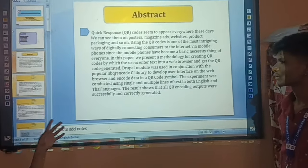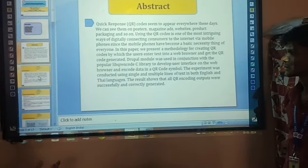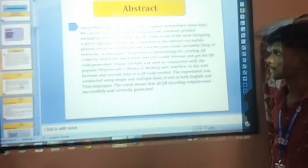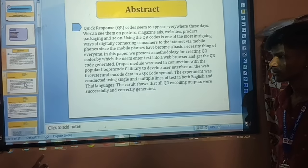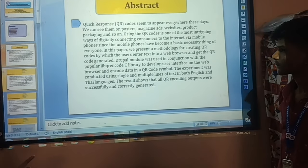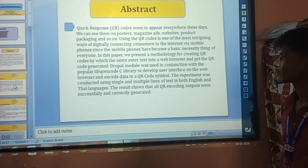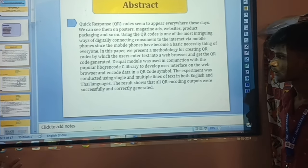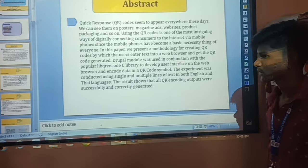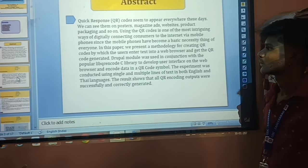Since mobile phones have become a basic necessity for everyone, in this paper we present a methodology for creating QR codes by which users enter text into a web browser and get the QR code generated. The experiment was conducted using single and multiple lines of text in both English and Thai language. The research shows that all QR encoding outputs were successfully and correctly generated.